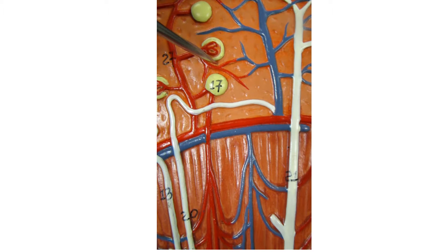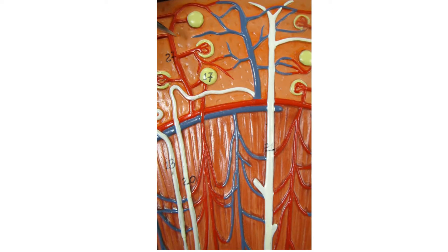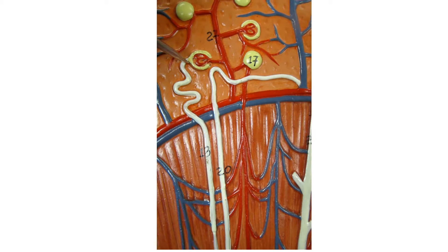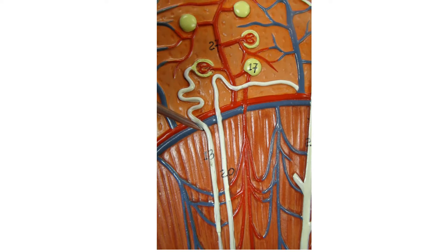The glomerulus is all those little blood vessels that are in charge of filtering our blood to get the waste materials out. The glomeruli are going to filter the waste material out of the blood, and it's going to pass into this little wiggly structure here — this is the proximal tubule, or proximal convoluted tubule.